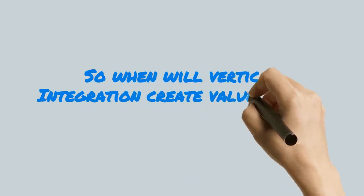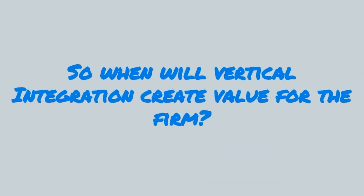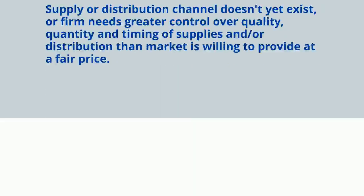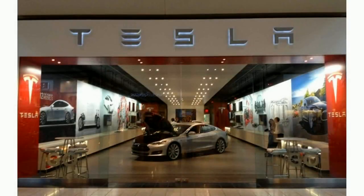When will vertical integration create value for the firm? A firm might need to vertically integrate when there's a market failure — for example, when the supply or distribution channel doesn't exist yet, or when the firm needs greater control over quality, quantity, and timing of supplies than the market provides at a fair price. For example, selling electric vehicles is more complicated than selling gas-powered cars, and Elon Musk didn't think he'd get the quality of salesmanship he wanted from traditional dealerships, so he started his own dealerships for Tesla cars.